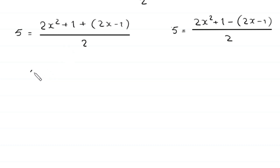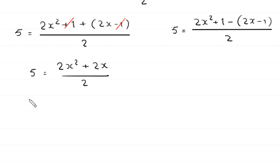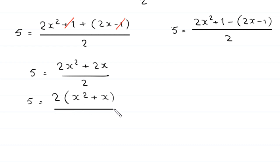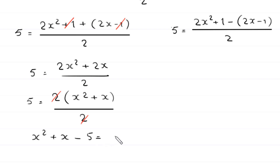From the first equation, the positive 1 and negative 1 cancel, leaving (2x² plus 2x) divided by 2. Factoring out 2 from the numerator gives x² plus x, and the 2s cancel. Moving 5 to the right hand side, this equation becomes x² plus x minus 5 equals 0.